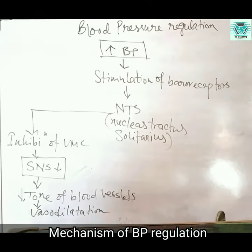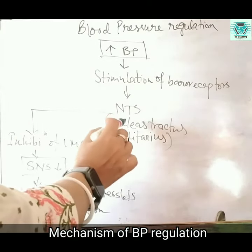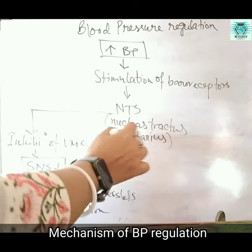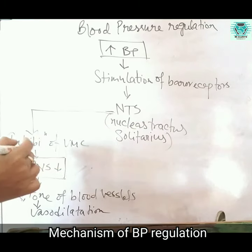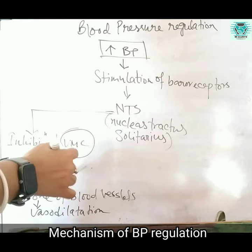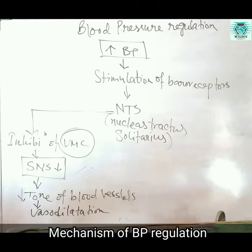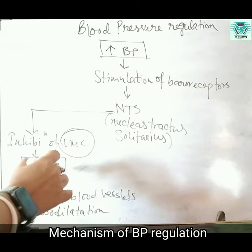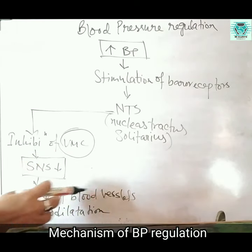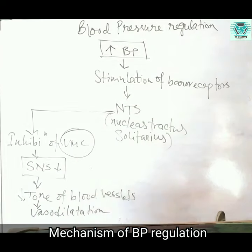When BP in our body increases, it stimulates the baroreceptors, which stimulate the nucleus tractus solitarius. This causes inhibition of the vasomotor center (VMC), leading to decreased activity of the sympathetic nervous system and decreased tone of the blood vessels, which causes vasodilatation. Due to vasodilatation, maximum blood is flowed through the vessels.